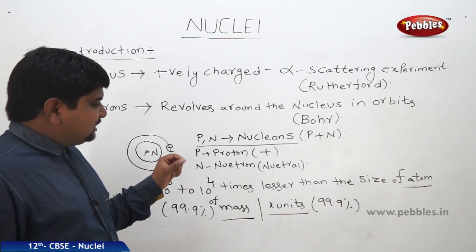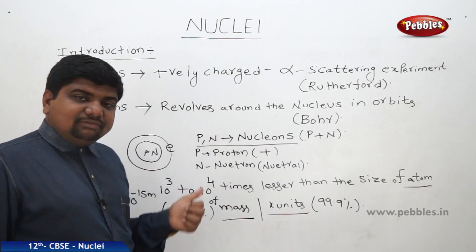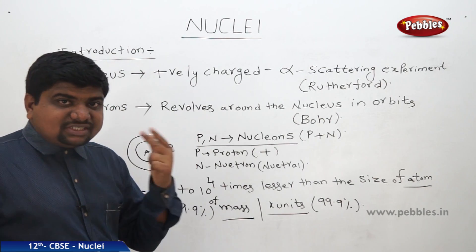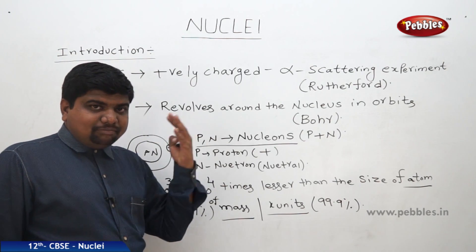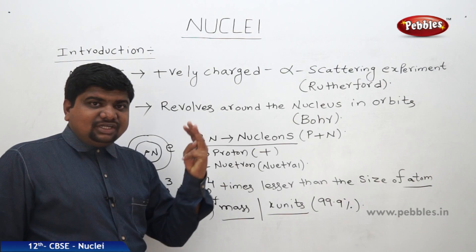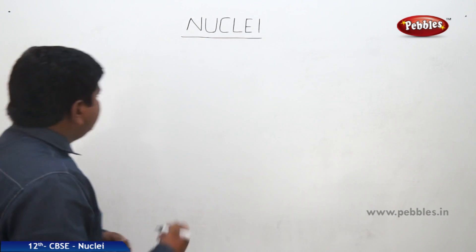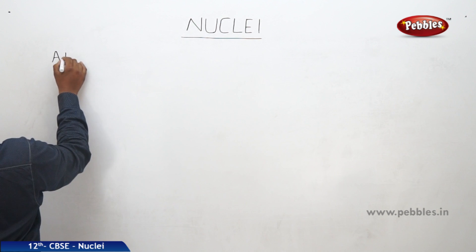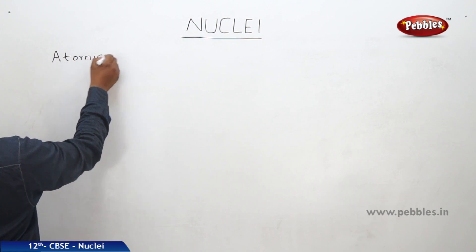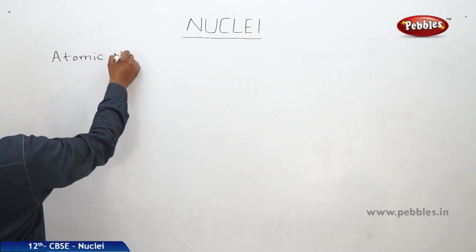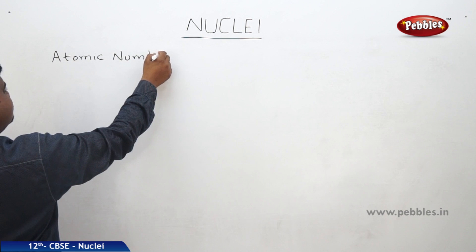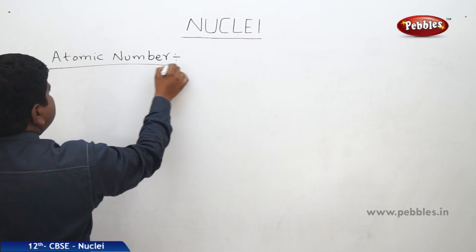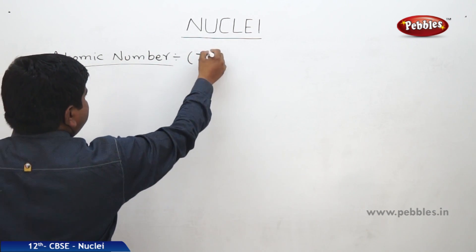Next we are going to see what is the atomic number, what is the atomic mass number, what is the atomic mass unit, and the remaining basics of the nucleus. The concept of atomic number — its symbol is Z.